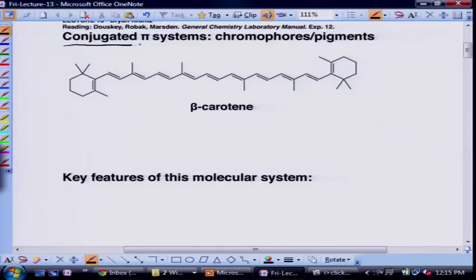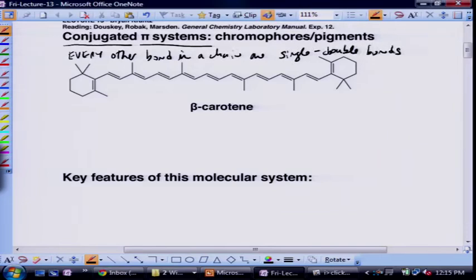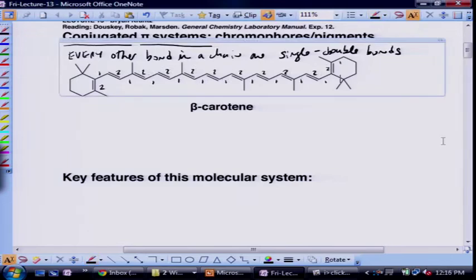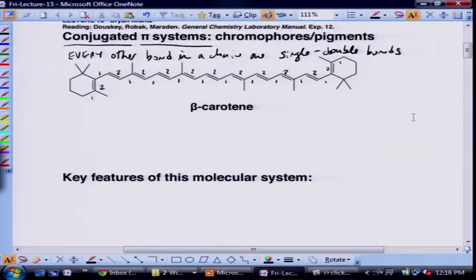And the structure within beta-carotene that's responsible for absorbing those visible photons is this conjugated pi system. So there's a conjugated pi system. And what is a conjugated pi system? Conjugated pi system is where every other bond in a big chain are basically single, double bonds. So we go, like, double bond here, single bond here, double bond, single bond, double bonds. And you can see, as you're going along here, we have a massive chain of double bonds and single bonds in a conjugated pi system. And that allows for electrons to move in a coordinated manner along this conjugated pi system.